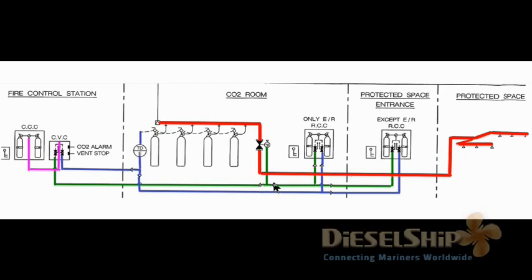There is a non-return valve here so the gas from the pilot cylinder can only pass one way — it cannot return, and it cannot go to the other valve control stations. The green line opens the main distribution valve. The blue line goes through a check valve and a time delay unit to open the main CO2 bottles in the CO2 room. As CO2 is released, following the red line through the distribution valve, it goes out to the engine room and the engine room space is flooded.